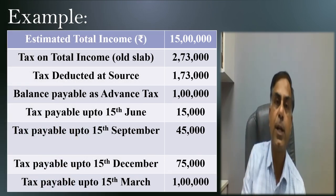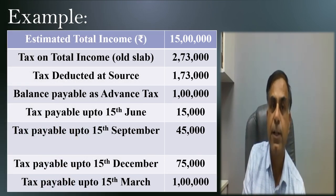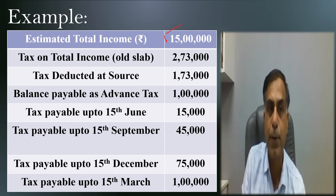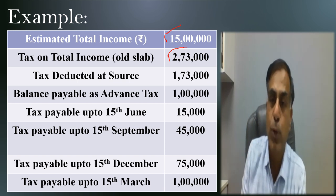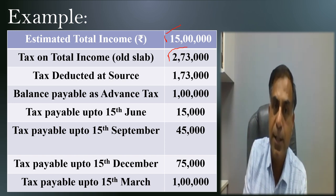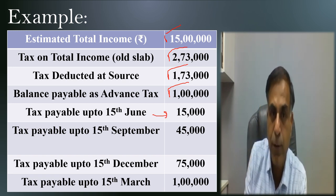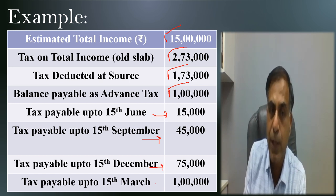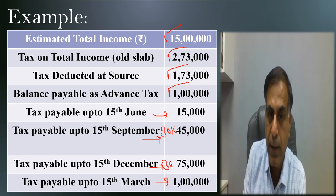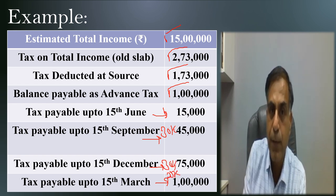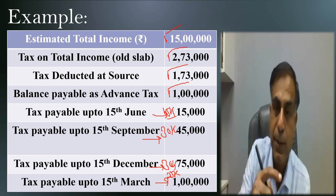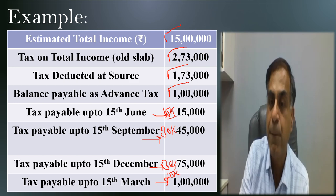Let me illustrate with an example. If the estimated total income of an assessee is ₹15 lakh and the total tax liability is ₹2,73,000, with TDS of ₹1,73,000, the balance net tax payable is ₹1 lakh. This person should pay ₹15,000 by 15th June, a cumulative ₹45,000 by 15th September, ₹75,000 by 15th December, and ₹1 lakh by 15th March. So incrementally: ₹15,000, then ₹30,000, then ₹30,000, and finally ₹25,000.